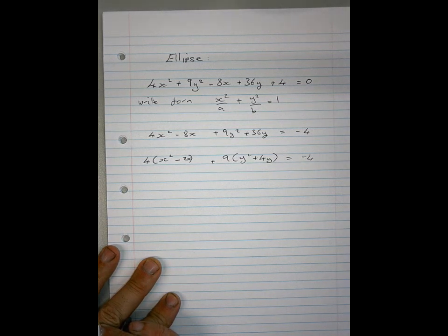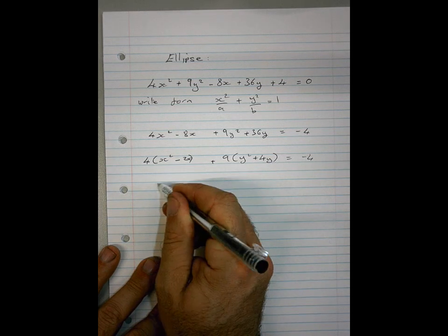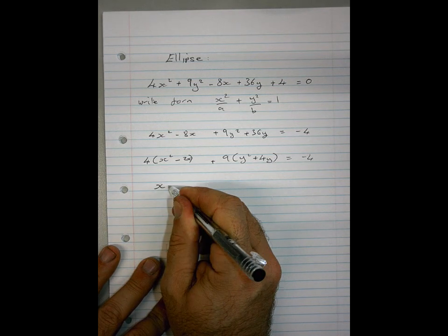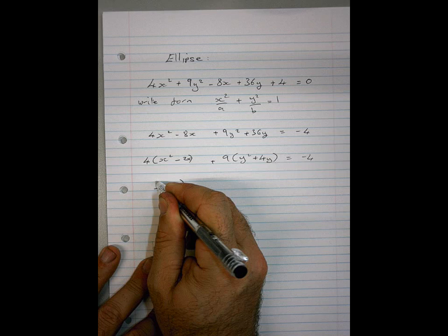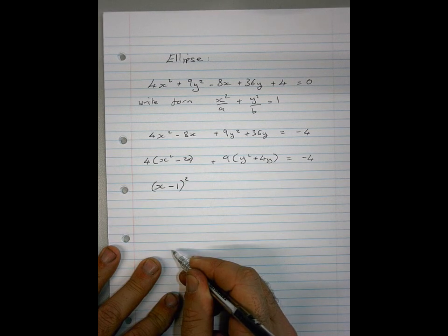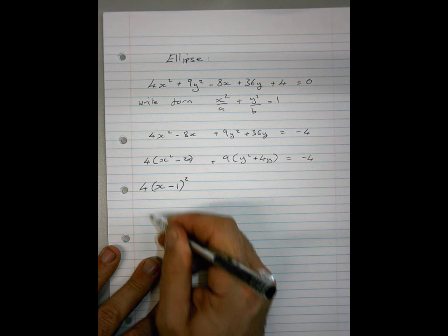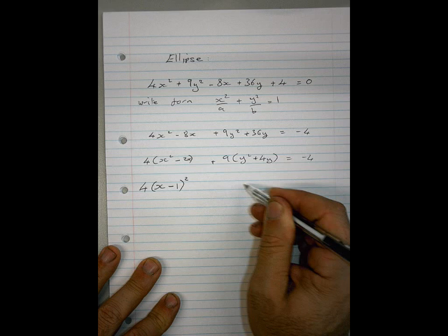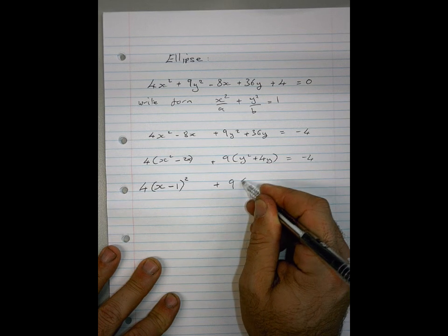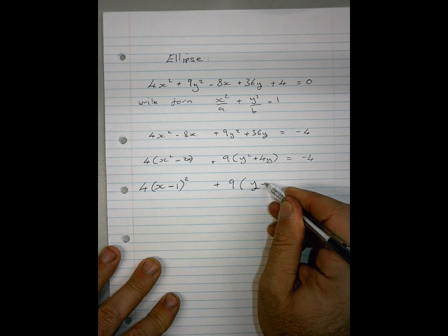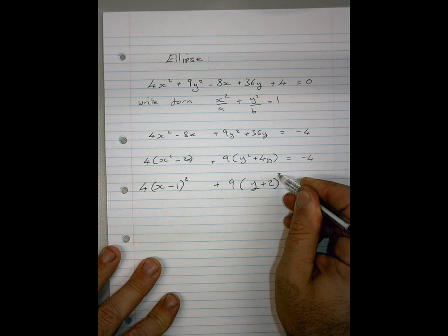Okay, so let's complete the little square in there then. So that's going to be (x - 1)². Don't forget there's a 4 there. Okay. Plus 9(y + 2)².